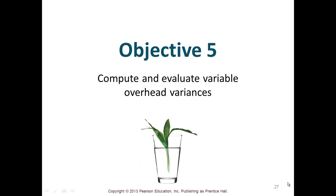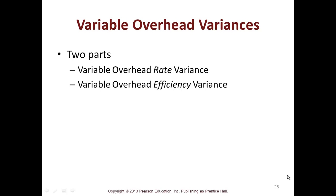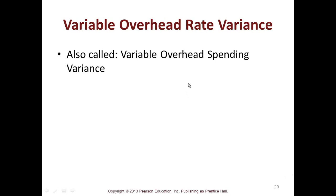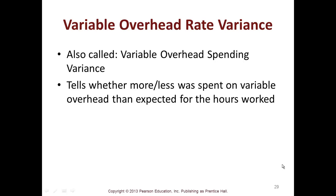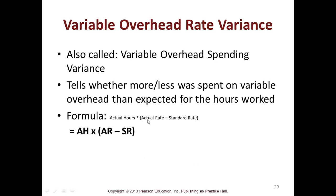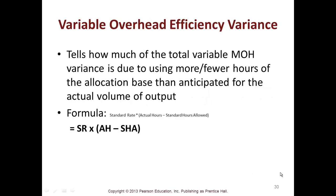Objective five is to compute and evaluate variable overhead variances. There are two parts: a variable overhead rate variance (also called variable overhead spending variance) and a variable overhead efficiency variance. The rate variance formula is: actual hours times (actual rate minus standard rate). The efficiency variance tells you how much of total variable overhead is due to using more or fewer hours of the allocation base than anticipated, and its formula is: standard rate times (actual hours minus standard hours allowed).